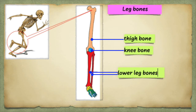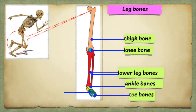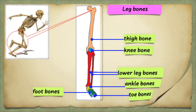What are the parts of your leg? You have the thigh and the lower leg. You also have the knee, the ankle, the foot, and the toes. Look at the leg bones: see the thigh bone, see the knee bone, see the lower leg bones, see the ankle bones, see the foot and toe bones.